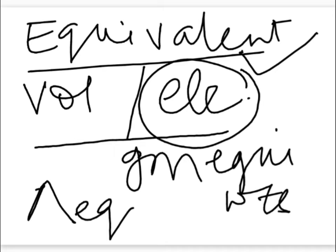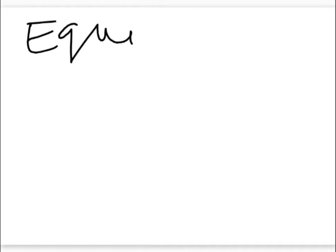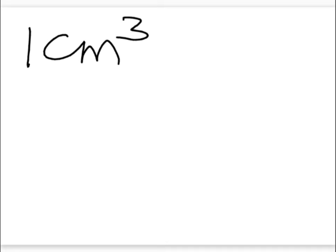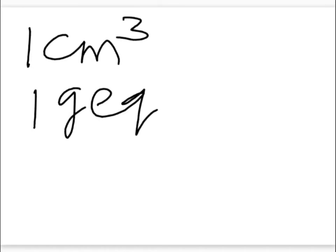Equivalent conductivity of a solution at a dilution V is defined as the conductance of all the ions produced from 1 gram equivalent of the electrolyte dissolved in V cm cube of the solution. The basic difference is: specific conductivity is the conductance defined for 1 cm cube of the solution, whereas equivalent conductivity is the conductance defined for 1 gram equivalent of the electrolyte.